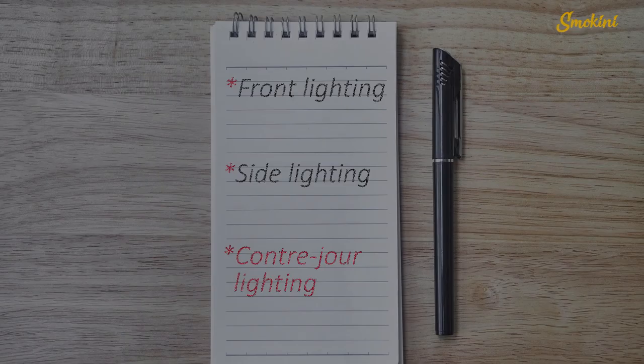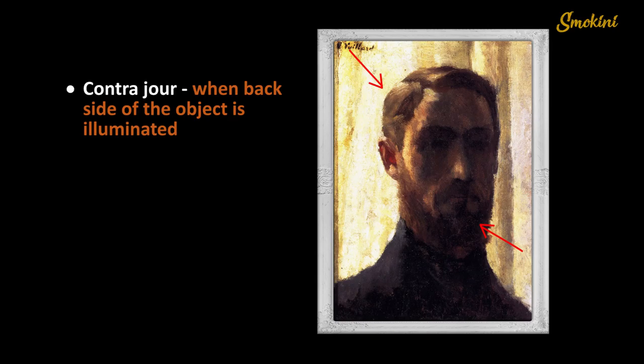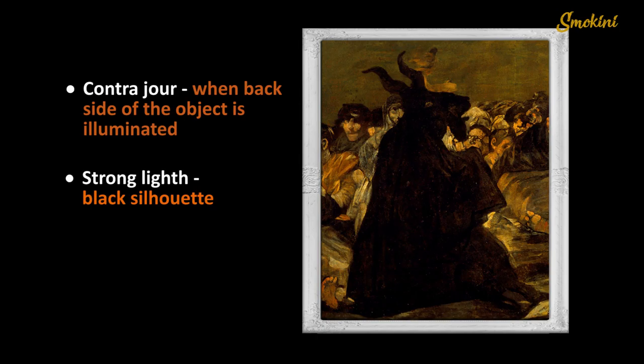Side lighting divides every image into a light and dark part. The light attracts the viewer's eyes, whereas the dark generalizes the form and conceals it in mystery. Contra-jour, or backlight: when the visible side of the object remains in shadow and its backside is illuminated, we call that backlighting. Sometimes light is so strong that we see just a black silhouette. Contra-jour light is really magnetic.